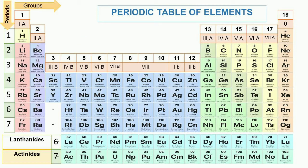There are 7 horizontal rows in the modern periodic table and these horizontal rows are called periods. The 1st period has 2 elements — hydrogen and helium — with atomic numbers 1 and 2 respectively. It is the shortest period. The 2nd period has 8 elements with atomic numbers 3 to 10; it is a short period and the elements are known as bridge elements. The 3rd period has 8 elements with atomic numbers 11 to 18, and is also called a short period.